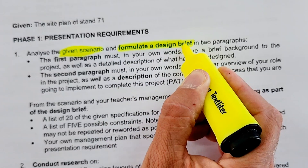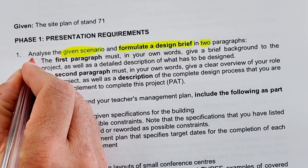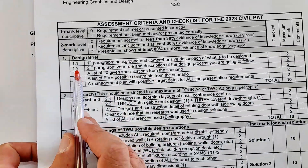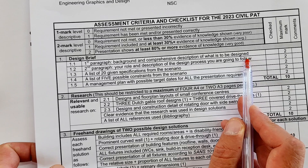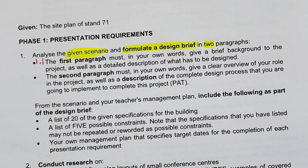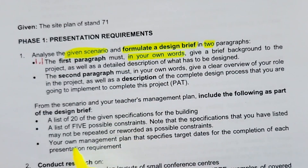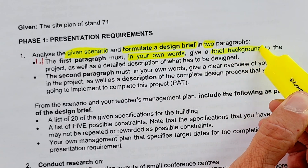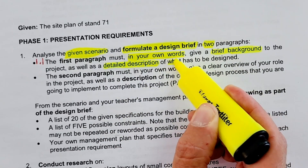The design brief needs to be done in two paragraphs. The first paragraph is labeled 1.1. If you look at your paid checklist, number 1.1 is the first paragraph that gives a background and comprehensive description of what is to be designed. In your own words — you cannot copy your friends or just copy the scenario as given — you need to give a brief background to this project as well as a detailed description of what has to be designed.